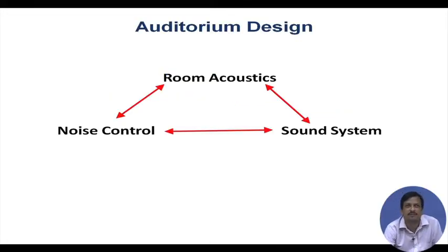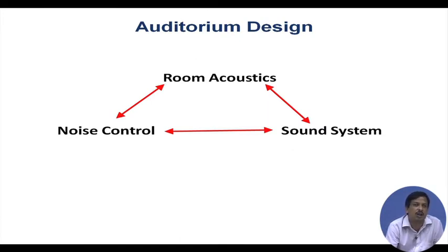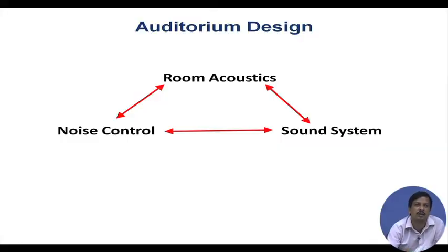Auditorium design has three parts. One is room acoustics — how do you treat the acoustics inside the auditorium. Second is the sound system — what kind of sound system to use so that every seat receives an equal amount of sound. Third is noise control — how to keep the auditorium free from external noise, which would increase environmental noise and distract the sound system.